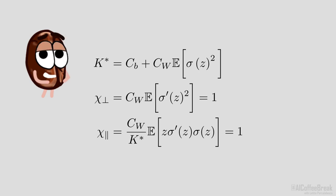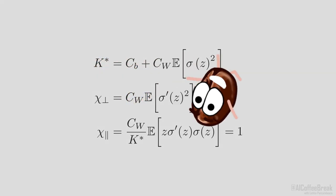In the end, we have three equations that determine what values C_b and C_w have, to be a network that is theoretically initialized optimally.